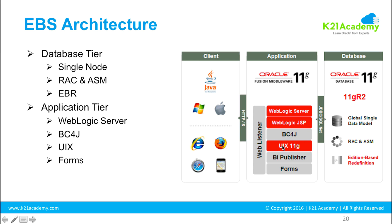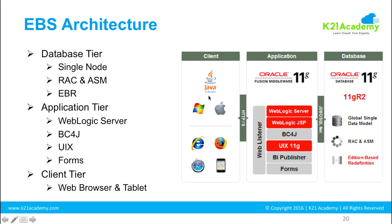The application tier also includes UIX (user interface layer), BI Publisher for reporting, and Forms — the form we opened when viewing profile option settings. In front, there is a web listener that listens for any client requests. End users always hit this web listener first. There could be a load balancer between the client and the web listener, but if not, the end user hits the web listener directly. The web listener then contacts the WebLogic server, UIX, BI Publisher, or Forms, which in turn talk to the database using JDBC. The client can be a web browser, tablet, or mobile device.